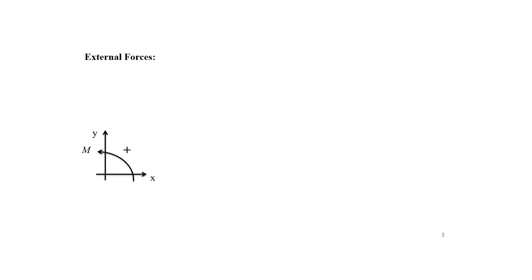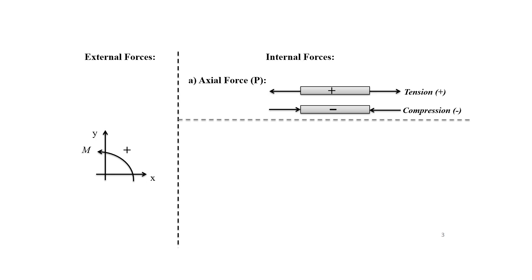For internal forces, the internal sign convention is generally used to plot the axial force, shear, and bending moment diagrams. Axial force is denoted by P. A force directed along or parallel to the member is the axial force. When it is in tension mode, it causes tension in the member and is positive. When it is in compression mode, it causes compression in the member and is negative.